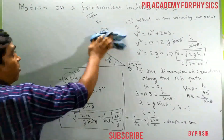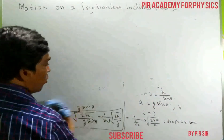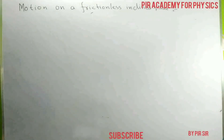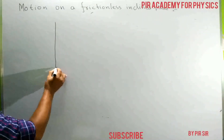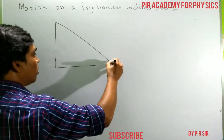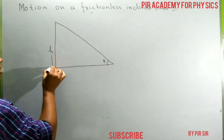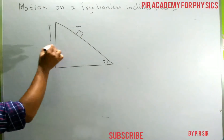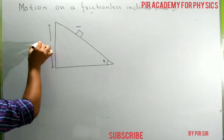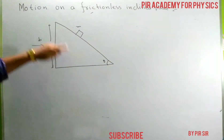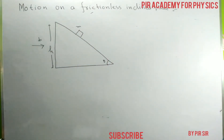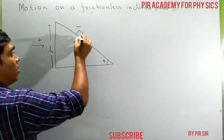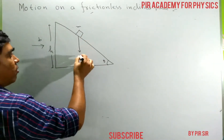Now the second condition: the system — the inclined plane with mass M — is accelerated in a horizontal direction with acceleration B. You must find the acceleration along the inclined plane. First, identify the total forces on the particle: gravitational force Mg acts downward, which resolves into Mg sin theta along the plane and Mg cos theta perpendicular to it.